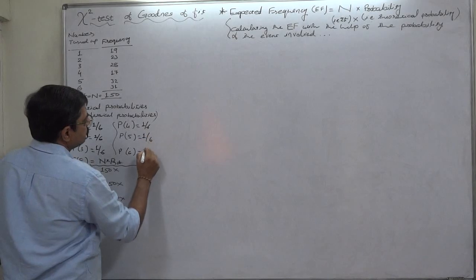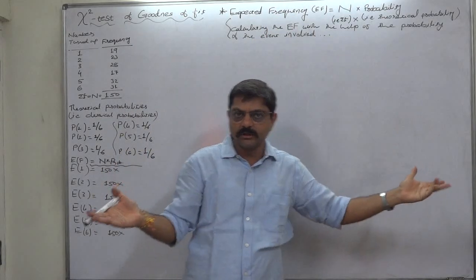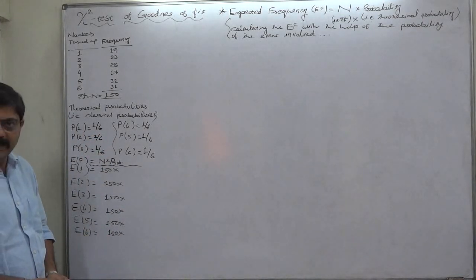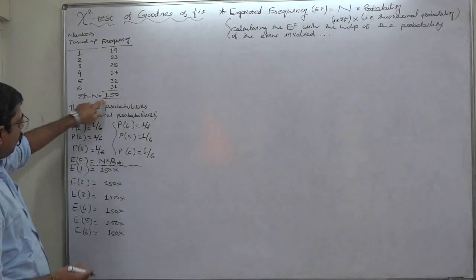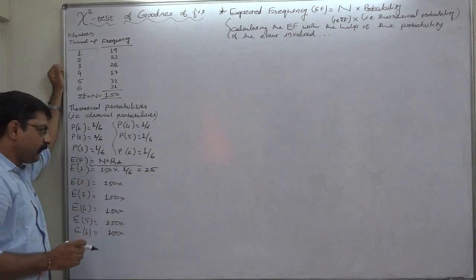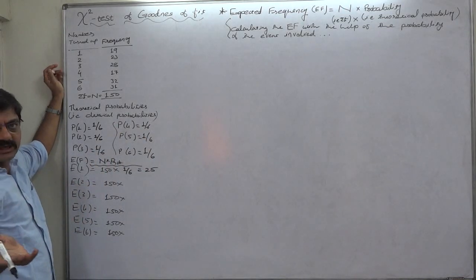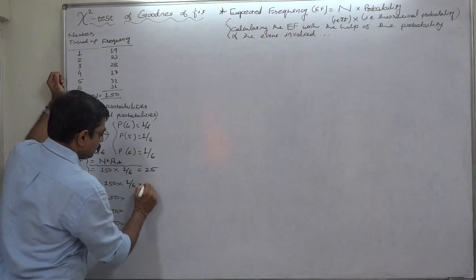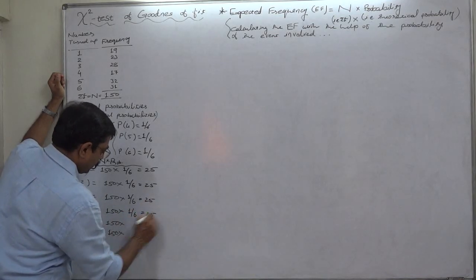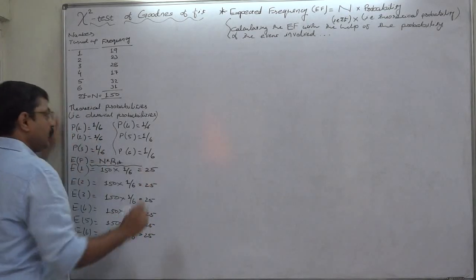For test of goodness of fit, the formula for expected frequency remains constant: N or sigma F into probability. We have the probability. We have the probabilities believing the die is unbiased. So sigma F or N is 150 into probability gives us expected frequency of 25. Since all the probabilities are equal, the expected frequency must also remain equal.